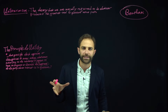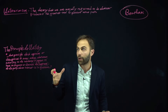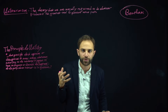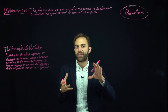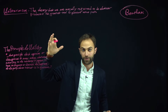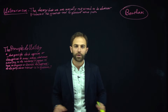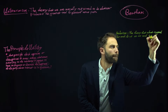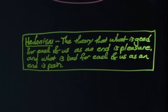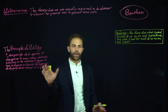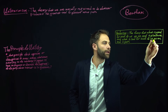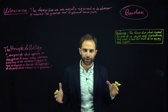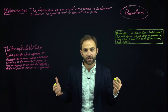If we're going to assess this theory and tell whether it accurately captures the real moral fabric of the universe, we're going to need to understand the sub-theories that this theory is made up of. The first sub-theory is called hedonism. Hedonism is the theory that what is good for each of us as an end is pleasure, and what is bad for each of us as an end is pain. Let's start with this phrase: as an end. Something can be good for a person either as a means or as an end.